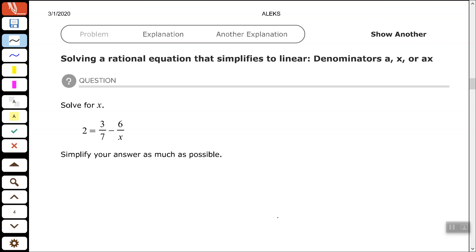For x, we have 2 equals 3 over 7 minus 6 over x. Again, if you see a variable in your denominator, you need to identify your excluded value or values. In this case, it's only one. So whatever expression that variable is in, then you take that expression and set it equal to 0. So x equals 0 in this case.